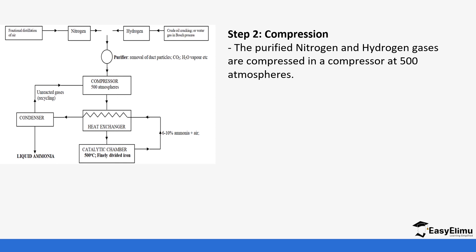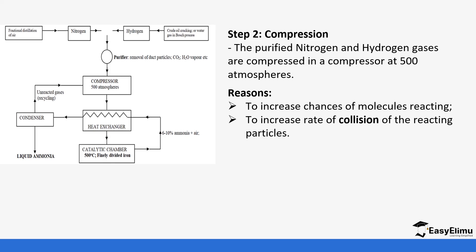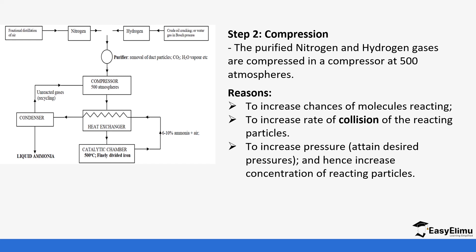In the second stage — compression — after it moves from the purifier, the nitrogen and hydrogen are compressed in a compressor at 200 to 300 atmospheres. High pressures are expensive, so the pressure is kept within that range. The reason it is compressed is to increase the chances of molecules reacting — because the particles are brought closer to each other, the rate of collision will be very high, and if the rate of collision is high, the particles will react more, increasing the concentration of the reacting particles.